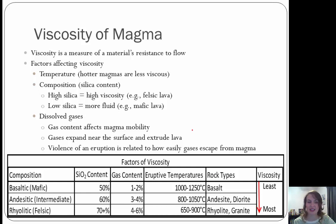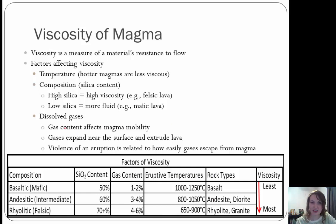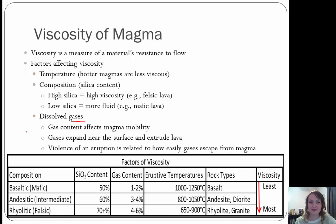Which one would you expect to be felsic? Mount St. Helens, right? It has more explosive volcanic activity. Why are felsic volcano eruptions more dangerous? Because they have more dissolved gases, they build up, and produce larger explosions. If we look at our compositions from basaltic, intermediate, to rhyolitic which is our felsic, you can see how the percent of silica, gas content, and temperature change.